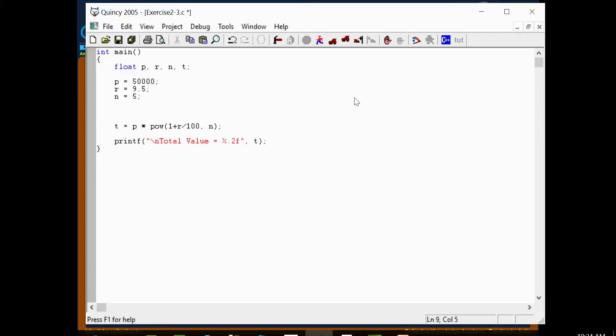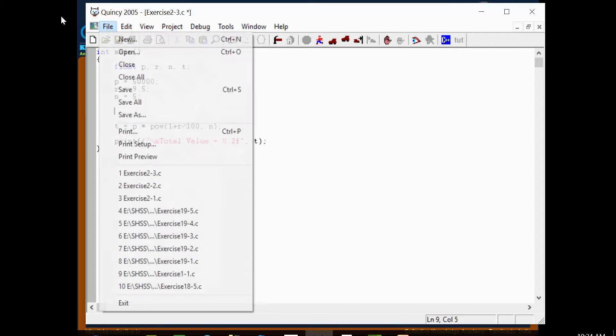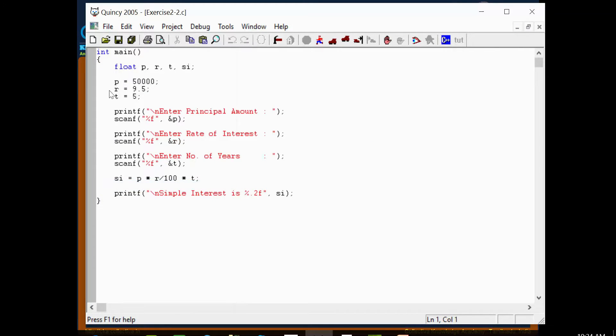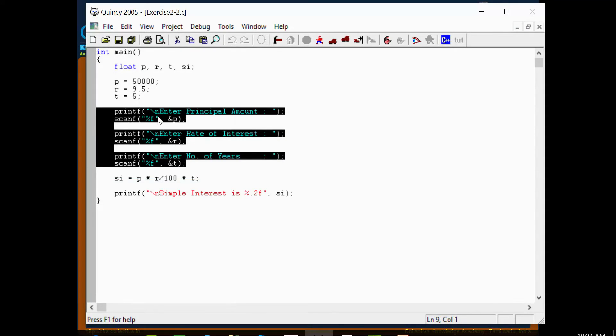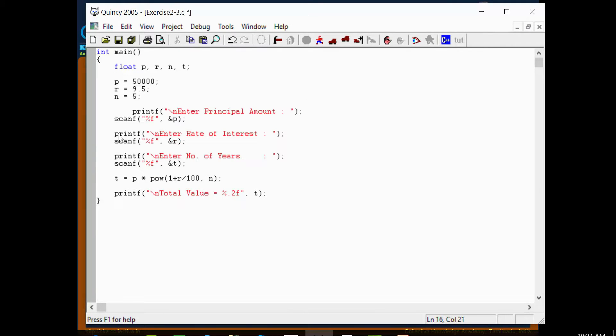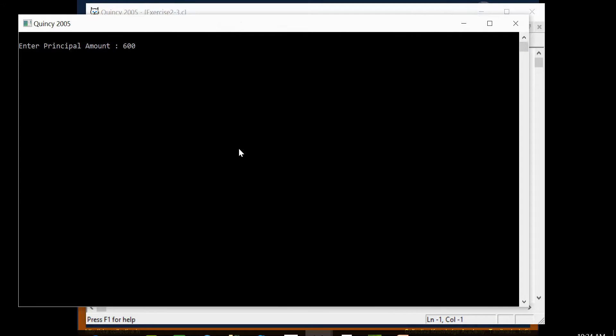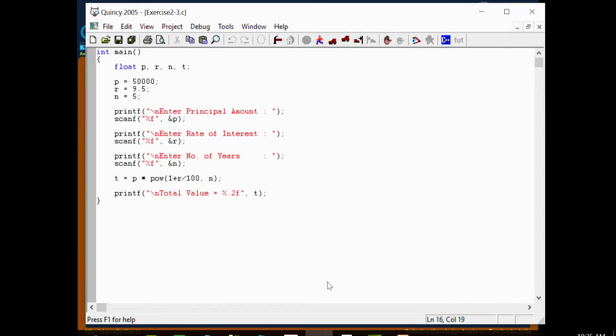Now we can take input for principle, rate of interest, and n. Build and run. So with 60,000 principal, 11.5% rate of interest, 10 years, the amount will be 178,000.